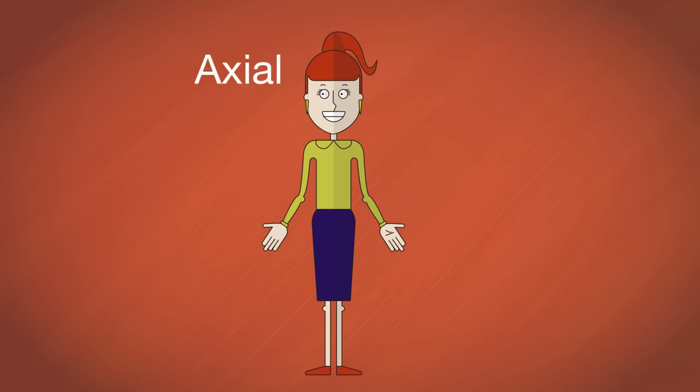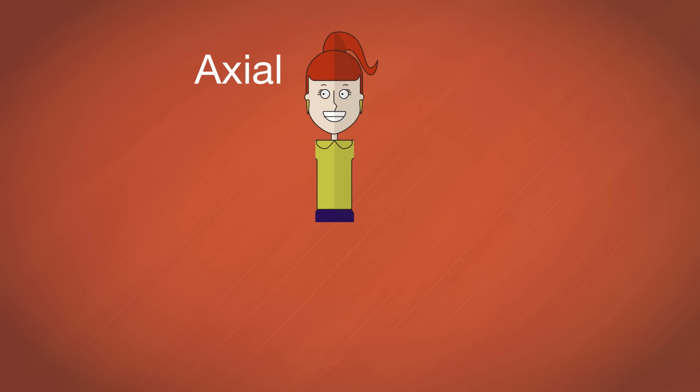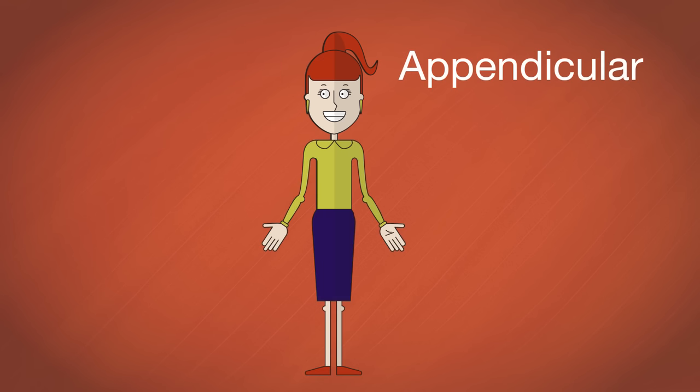The body includes an axial portion and an appendicular portion. The axial portion includes the head, neck, and trunk. The appendicular portion includes the arms and legs and their attachments.